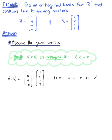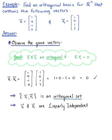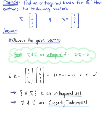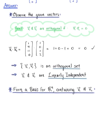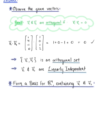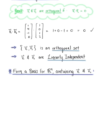Woohoo! This allows us to conclude that vector v sub 1 and vector v sub 2 form an orthogonal set of vectors, which implies that v1 and v2 are linearly independent. So now we are officially ready to form a basis for R4 containing vectors v sub 1 and v sub 2.